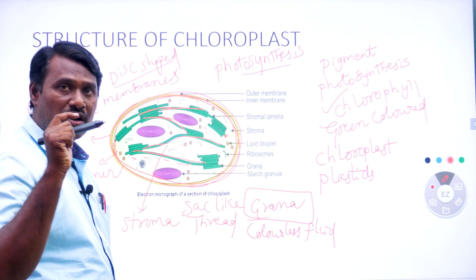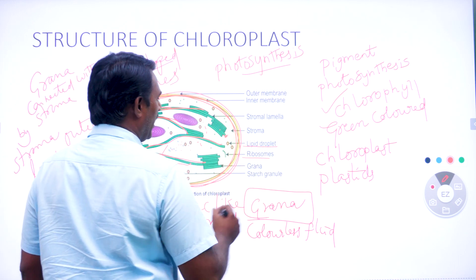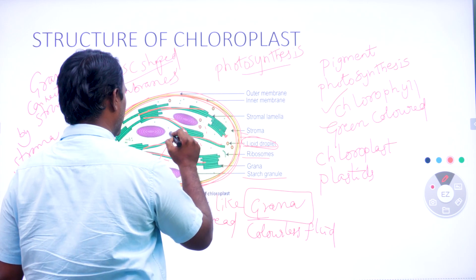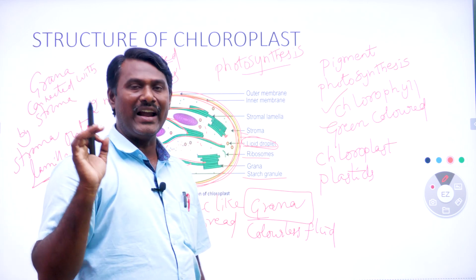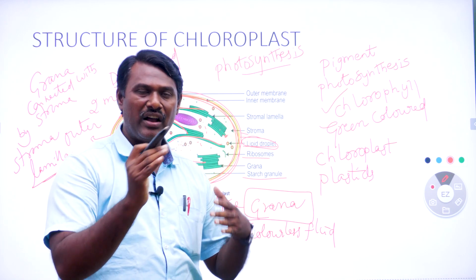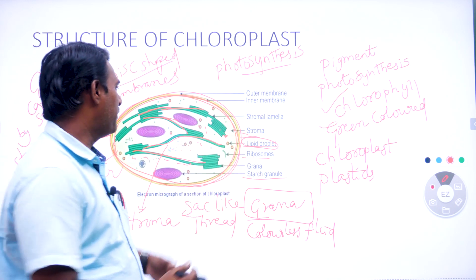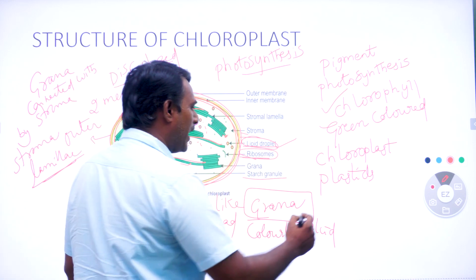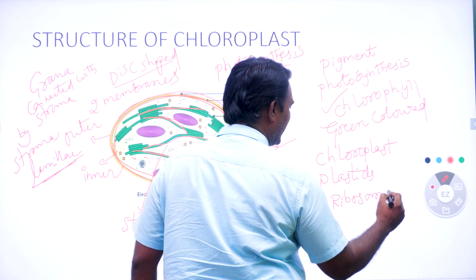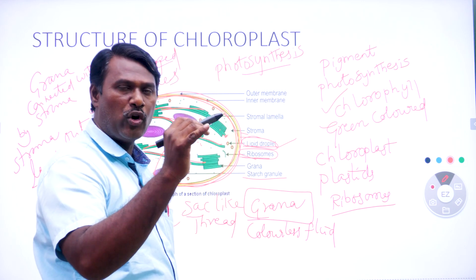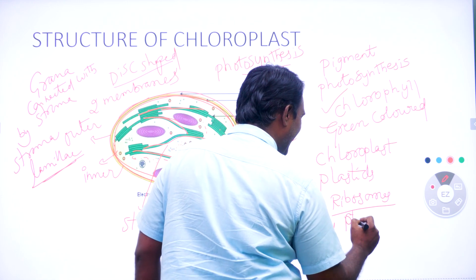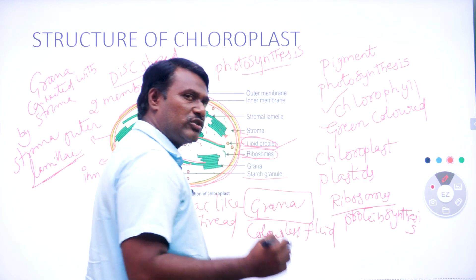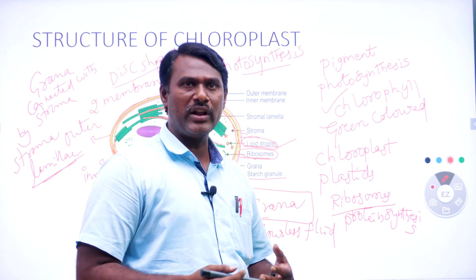Within the chloroplast structure we can see the presence of lipid droplets, ribosomes, and starch granules. Lipid droplets are oil glands or lipid glands present within the chloroplast. Ribosomes are a type of cell organelle present in every cell, and they are mainly involved in protein synthesis — that is why ribosomes are called protein factories of the cell.